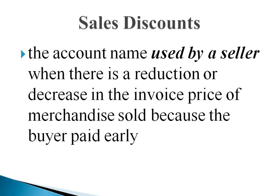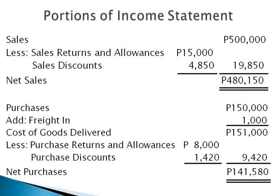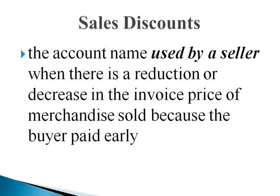Sales discounts is the account name used by a seller when there is a reduction or decrease in the invoice price of merchandise sold because the buyer paid early. Sales discounts is shown in the income statement as a deduction from sales, making it a contra sales account. Therefore, if the normal balance of sales is credit, then the normal balance of sales discounts is debit.